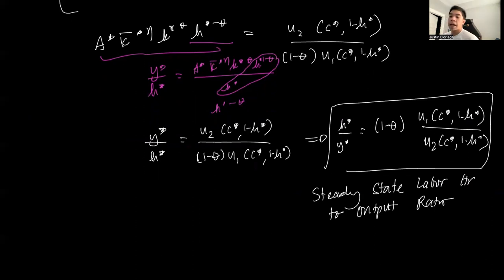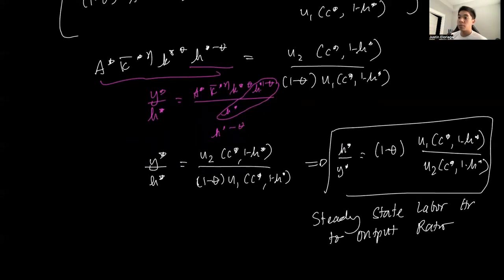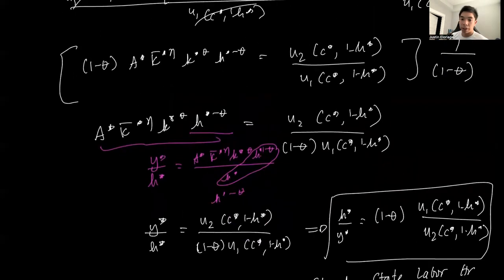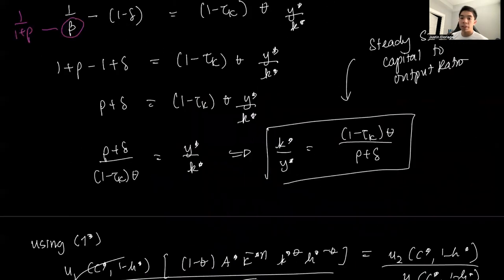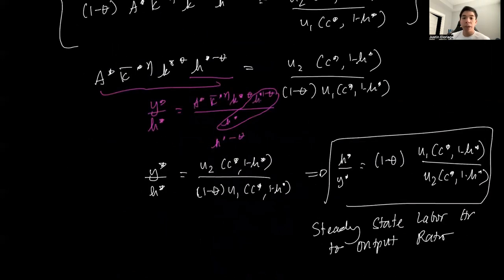These ratios — the steady-state capital-to-output ratio and the labor-to-output ratio — are what we solve for and calibrate in the competitive equilibrium. This completes the solution to the competitive equilibrium and the equilibrium allocations. In the next video, we'll talk about the social planner's problem. Thank you very much for your attention.